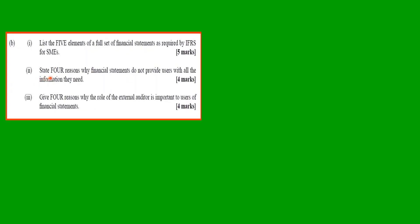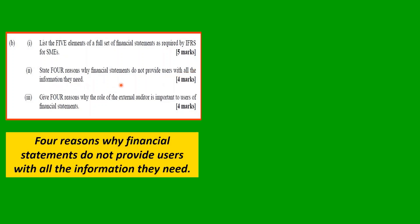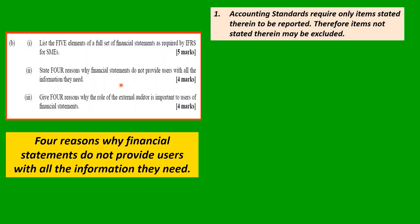Part two: State four reasons why financial statements do not provide users with all the information they need. The focus here is on 'all the information they need.' First reason: the accounting standards require only items stated within the accounting standards to be reported. Therefore, items not stated within may be excluded, and the user may need some of those excluded items.